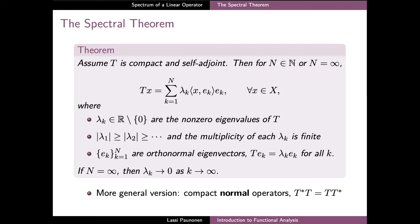This result demonstrates that compact self-adjoint operators have quite similar structure compared to Hermitian matrices, with the main exception being that zero may be an accumulation point of the eigenvalues of T, or an eigenvalue with an infinite number of linearly independent eigenvectors, or possibly both of these things.